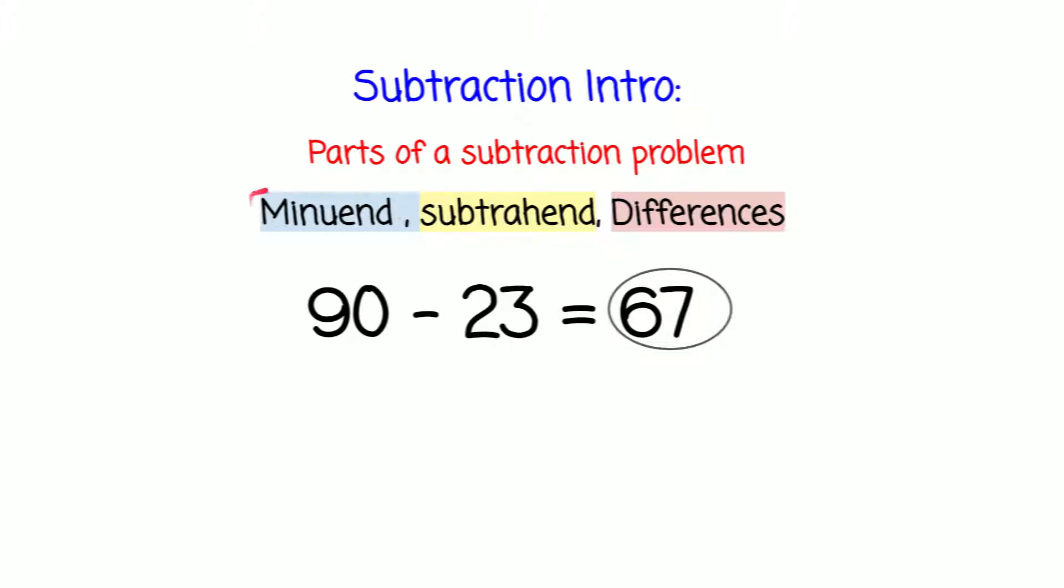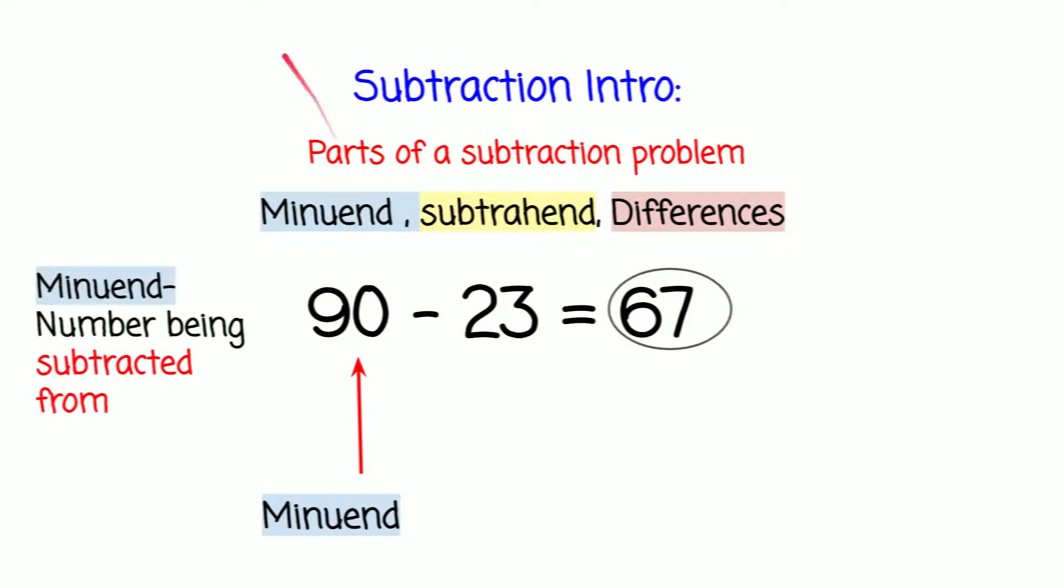Let's see what the first vocabulary word, minuend, is. 90 is represented as the minuend. Let's see what the definition of this vocabulary word is. The definition is number being subtracted from.